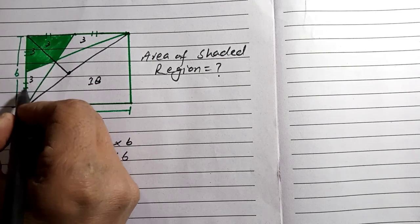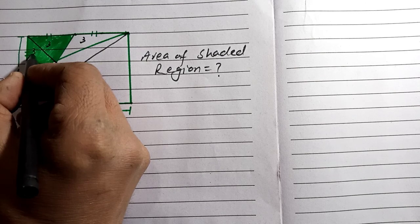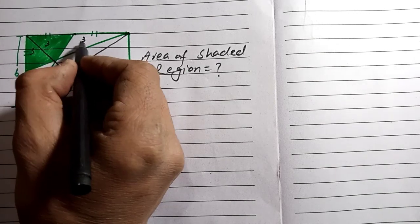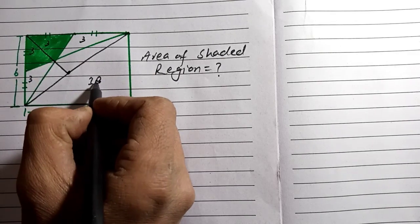So this total area will be 3 plus 3 which is 6, and 3 plus 6, so total will be 12, so we can get 18. This is 3 and this is 3, so total will be 18. So we are finding the area of this shaded region.